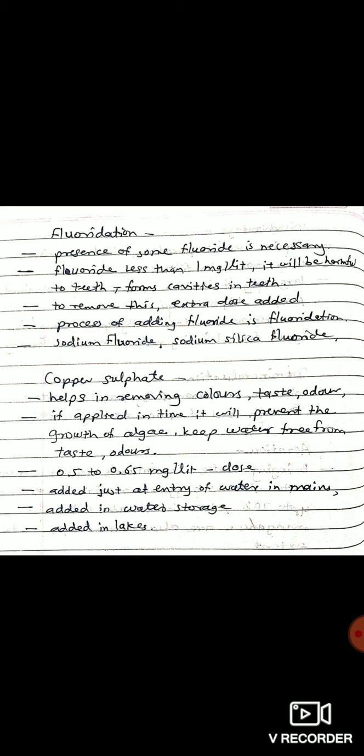It is usually added at the rate of 0.5 to 0.65 milligrams per liter to the treated water before it is allowed for distribution in the main system. The solution of copper sulphate is generally prepared and it is added just at the entry of water in the distribution system. It can also be added in clear water storage reservoirs.